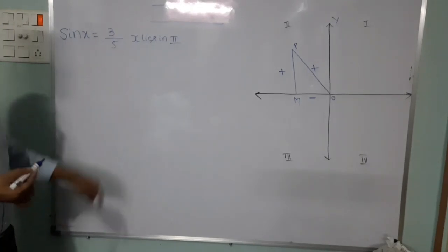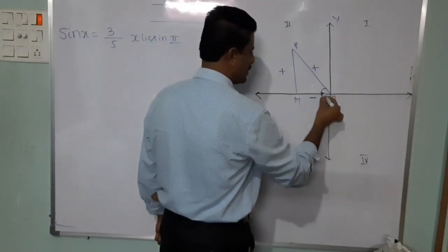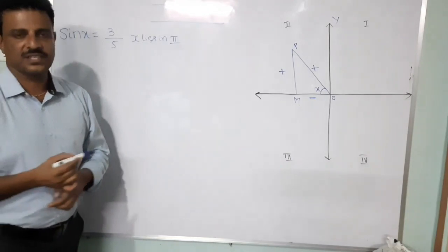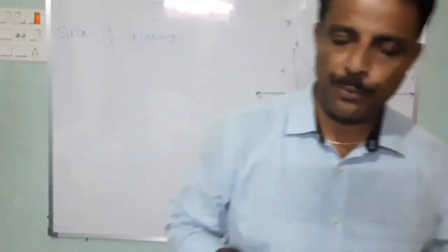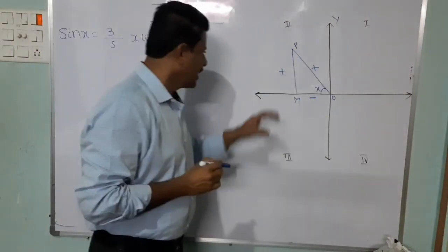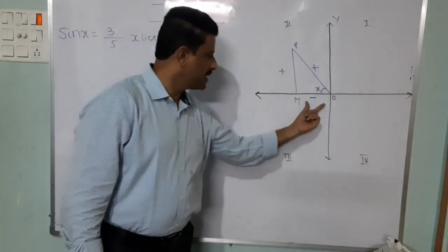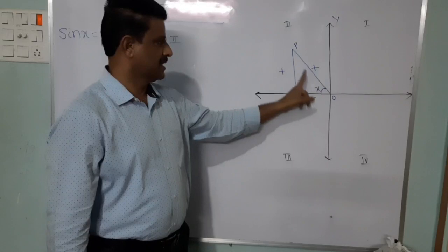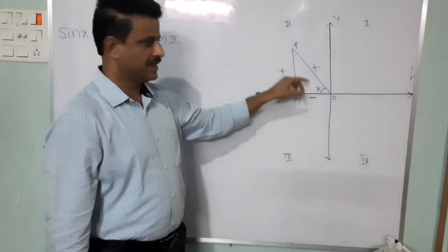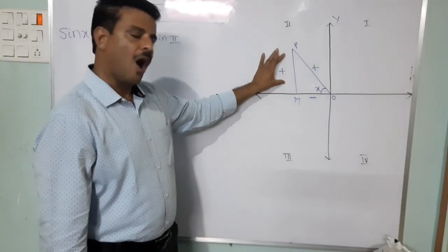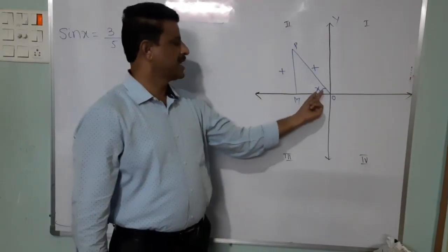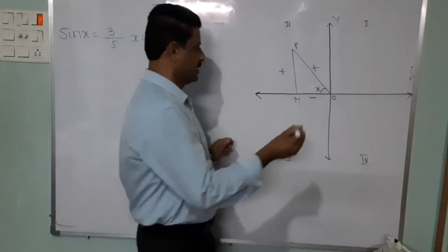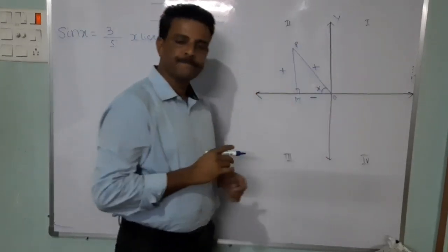Given sin x and x lies in the second quadrant. Sin x is defined as opposite by hypotenuse. PM is the opposite side, OM is the adjacent side, and OP is the hypotenuse. PM is opposite to angle x, OM is nearest to x so it is adjacent, and OP is opposite to 90 degrees so it is the hypotenuse.